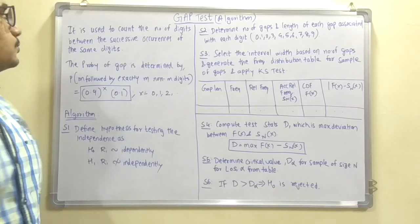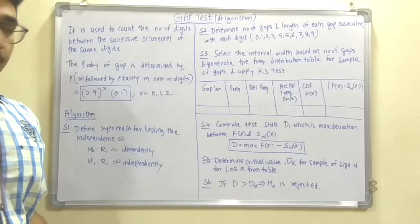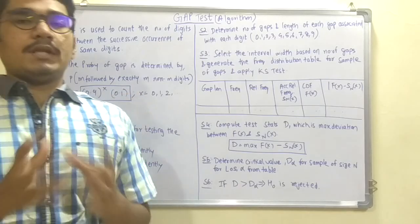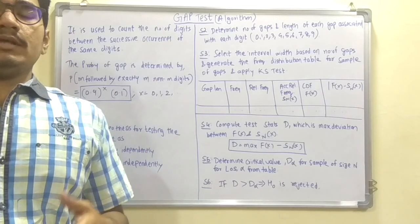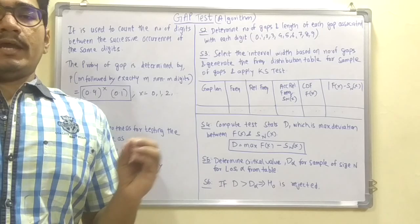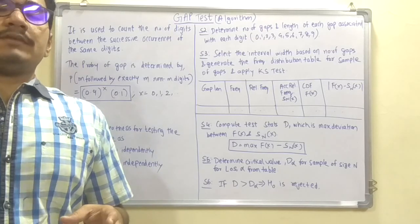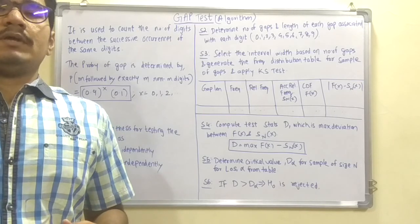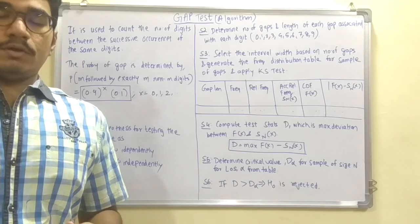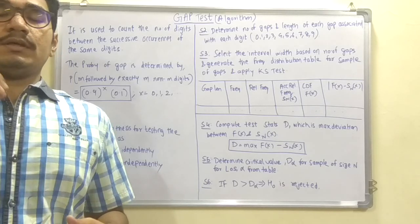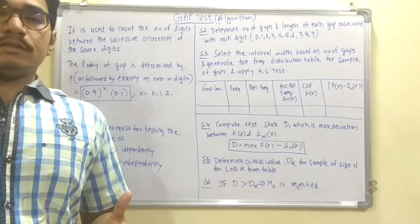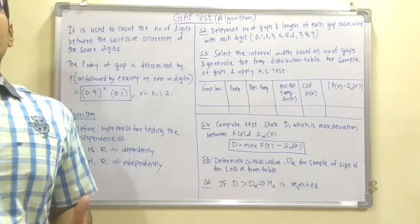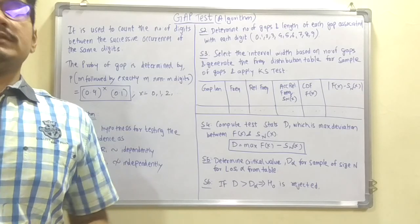First of all, gap test is used to count the number of digits between successive occurrences of the same digits. This means if a stream of digits is there like 0, 1, 2, 3, 4, 5, 6, 7, 8, 9, and it may be random, for example we take digit 0 and count after how many occurrences the next 0 appears. Suppose the next 0 occurs after the 33rd occurrence, then that would be the length of that particular gap for 0. Likewise you calculate for each digit: 1, 2, 3, 4, 5, 6, 7, 8, 9.